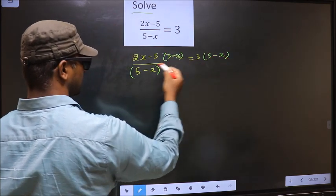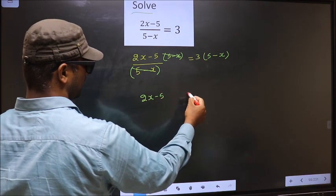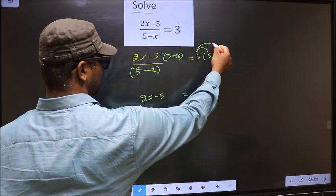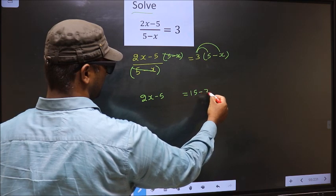Now 5 minus x cancel out, you are left with 2x minus 5 equal to, here you open up the brackets in this way, that is 3 into 5 is 15, minus 3 into x is 3x.